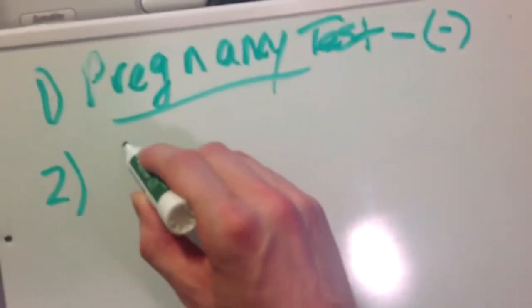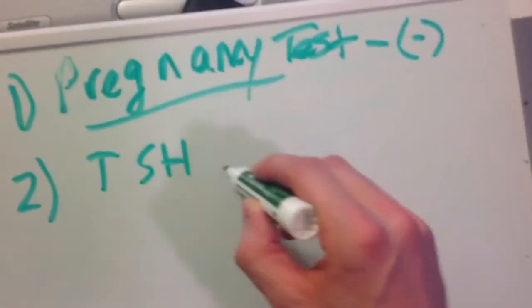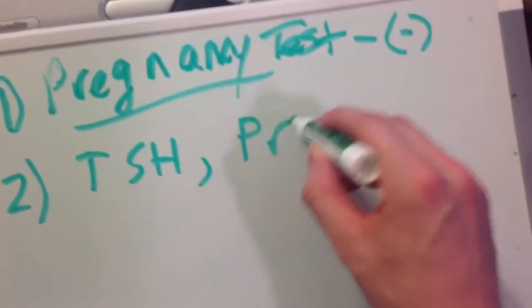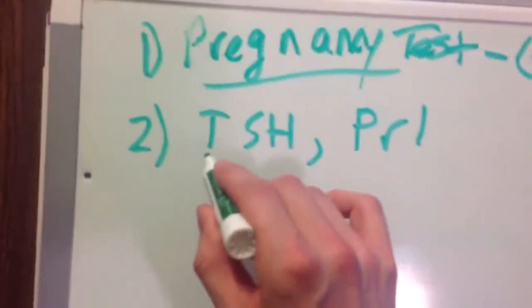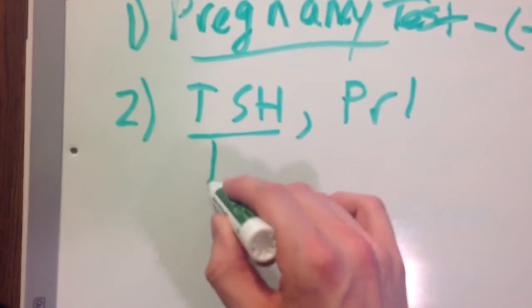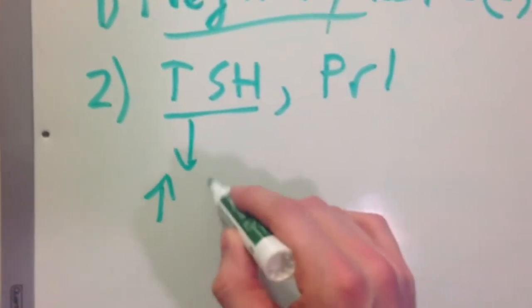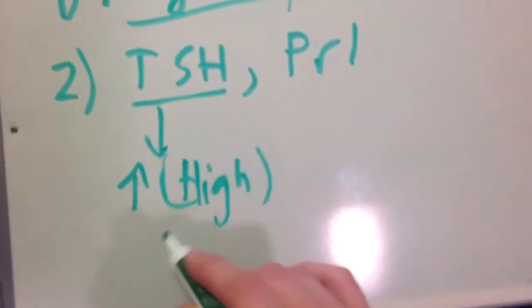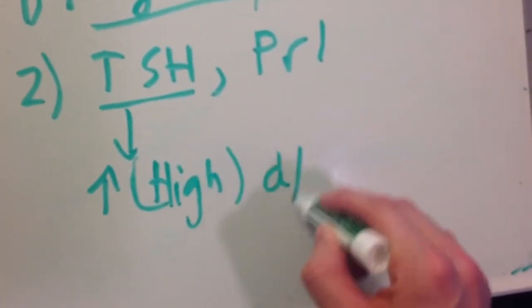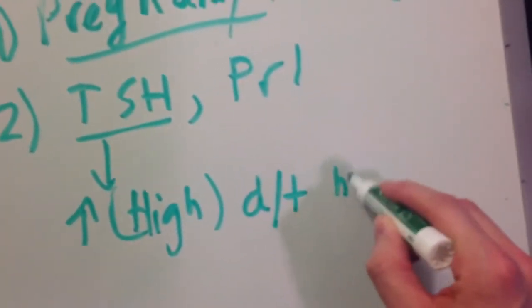Second thing you want to do is TSH levels and prolactin levels. Two things that can cause secondary amenorrhea is TSH, if it is high, due to hypothyroidism.